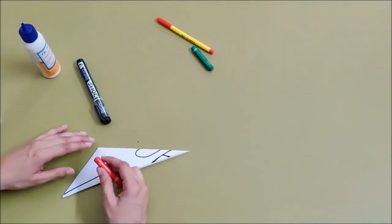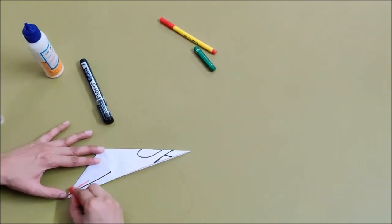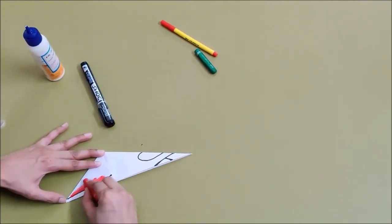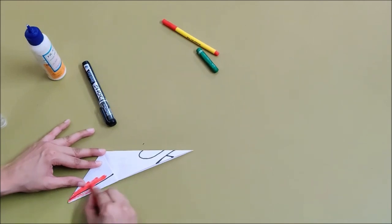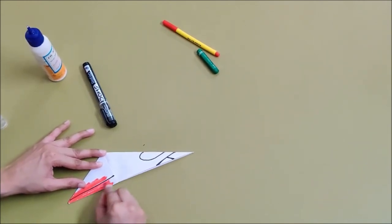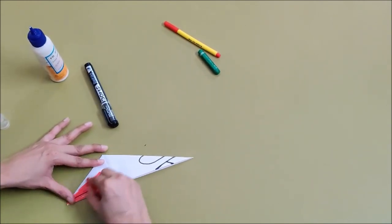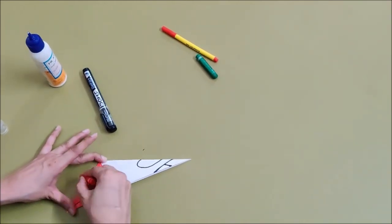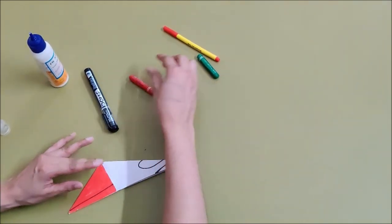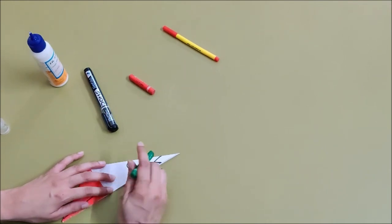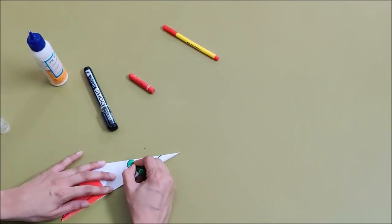Now I am going to color this side. This is the beak of the parrot. And this feather I am coloring it green.